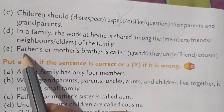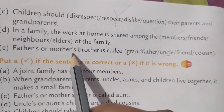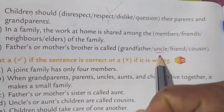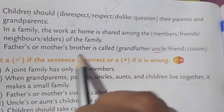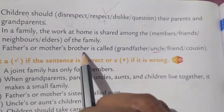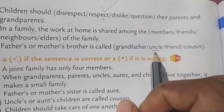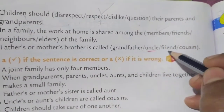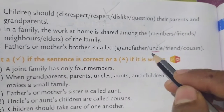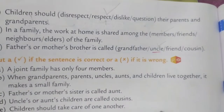Then question E: 'Father's or mother's brother is called dash.' Father's brother or mother's brother — we can call him uncle. Very good, the answer is uncle. Spelling: U-N-C-L-E.